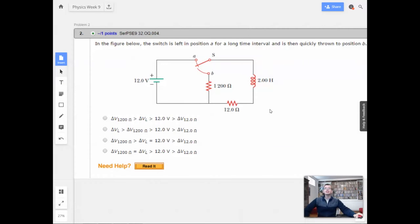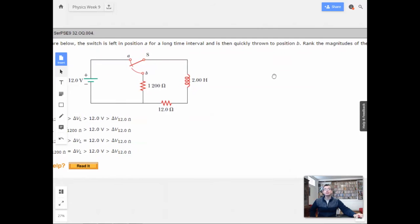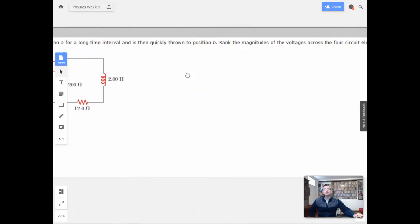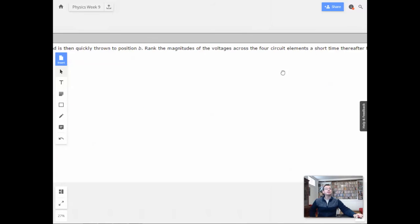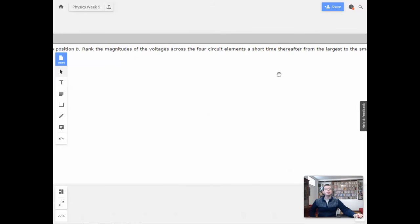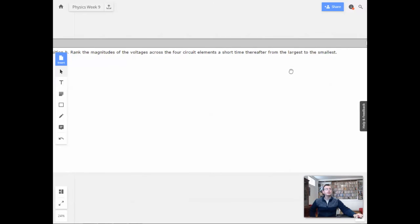In the figure below, the switch is left in position A for a long time interval, and is then quickly thrown into position B. Rank the magnitude of the voltages across the four circuit elements a short time thereafter, from the largest to smallest.